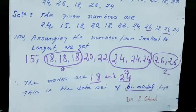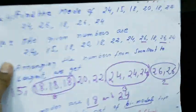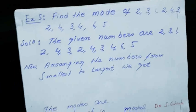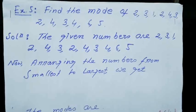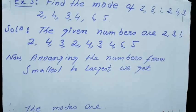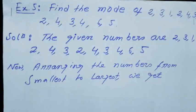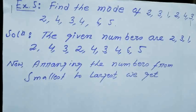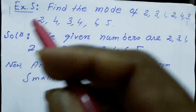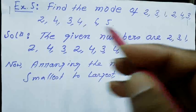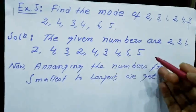Moving to the next problem — this is the same type of problem. Find the mode of: 2, 3, 1, 2, 4, 3, 2, 4, 3, 2, 4, 3, 4, 6, 5. In this way you will calculate. This is the step — first write 'solution,' then write the given numbers: 2, 3, 1, 2, 4, 3, 3, 4.